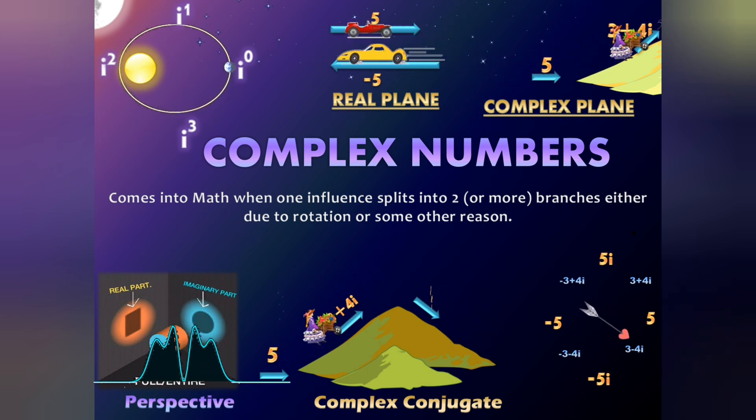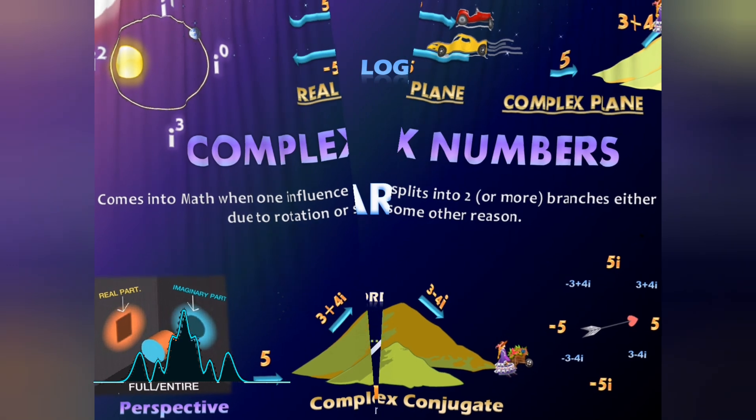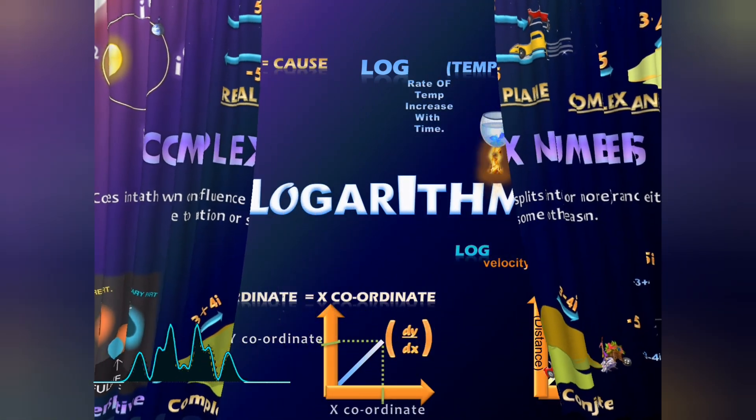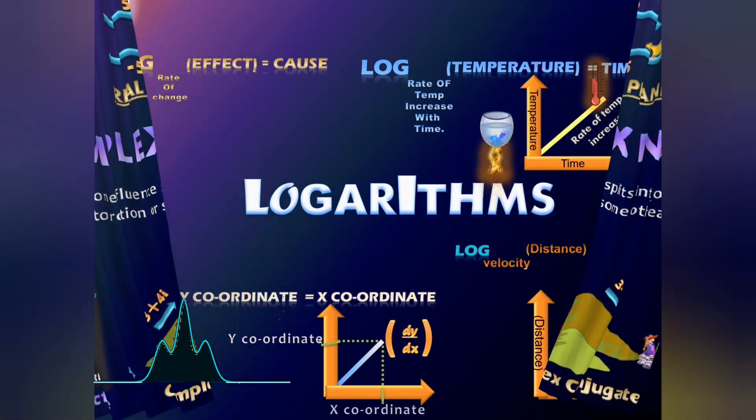What if the base of logarithms is the rate at which change takes place? What if log of a number gives you the cause for every effect?